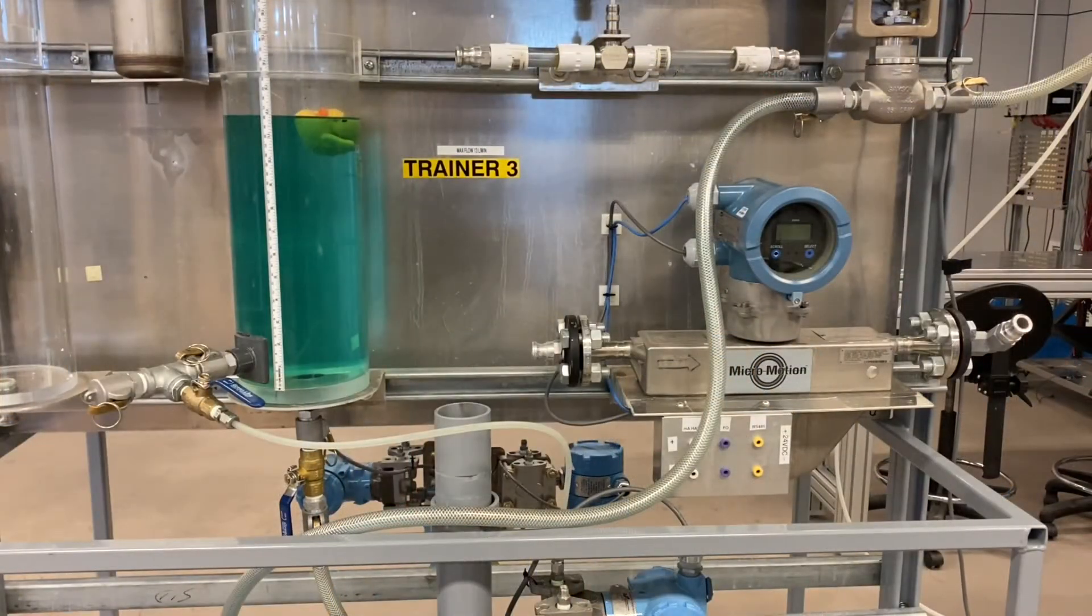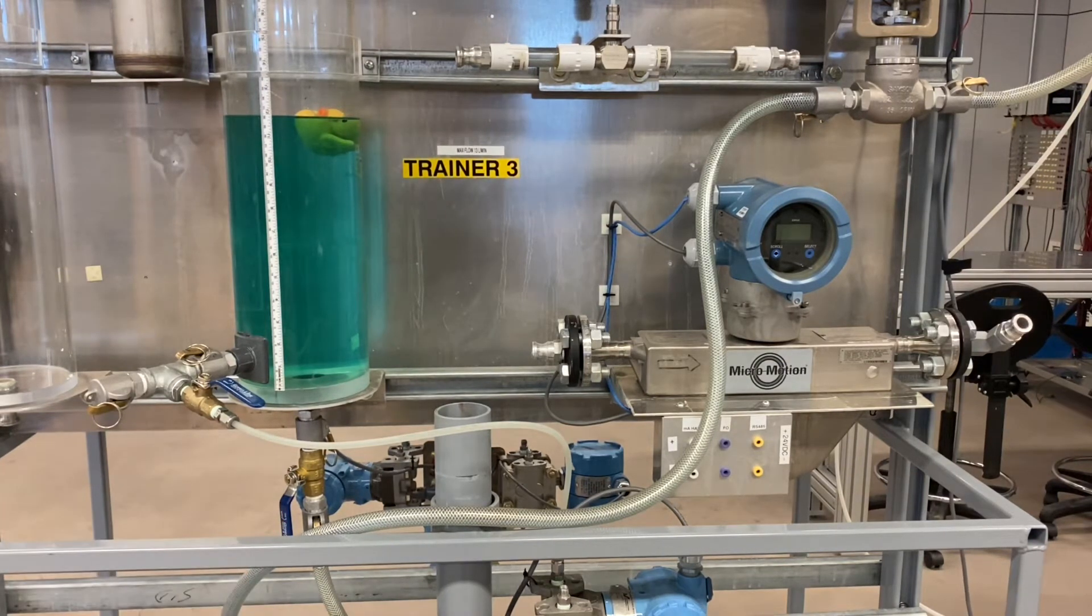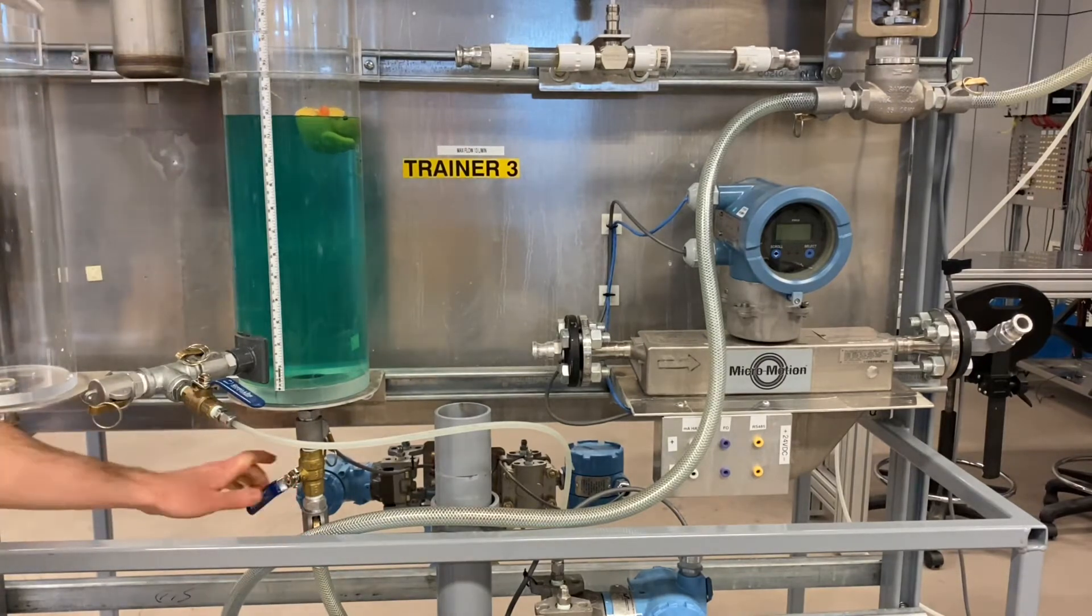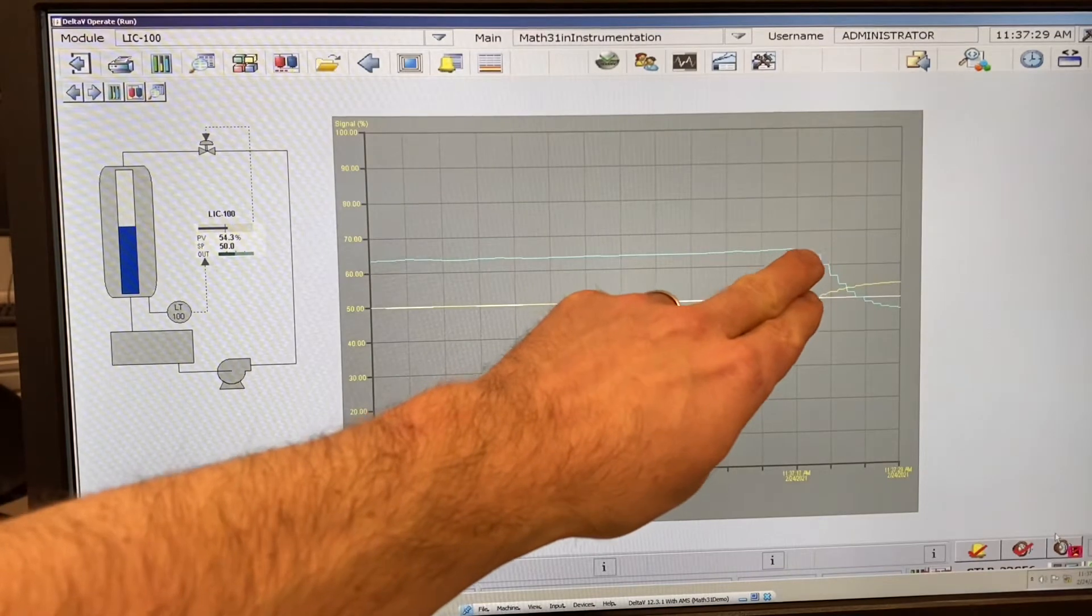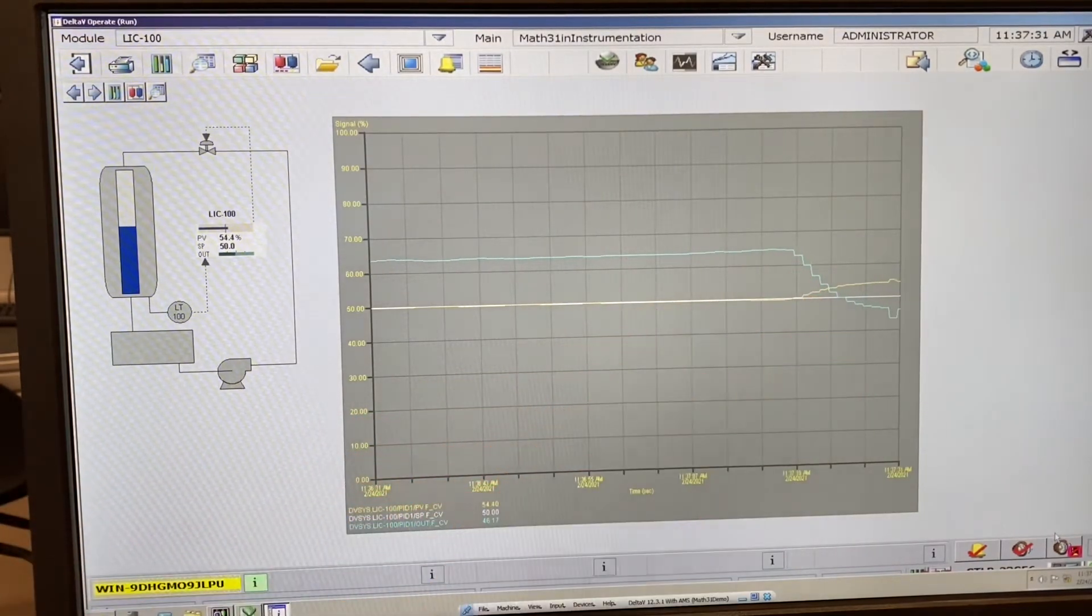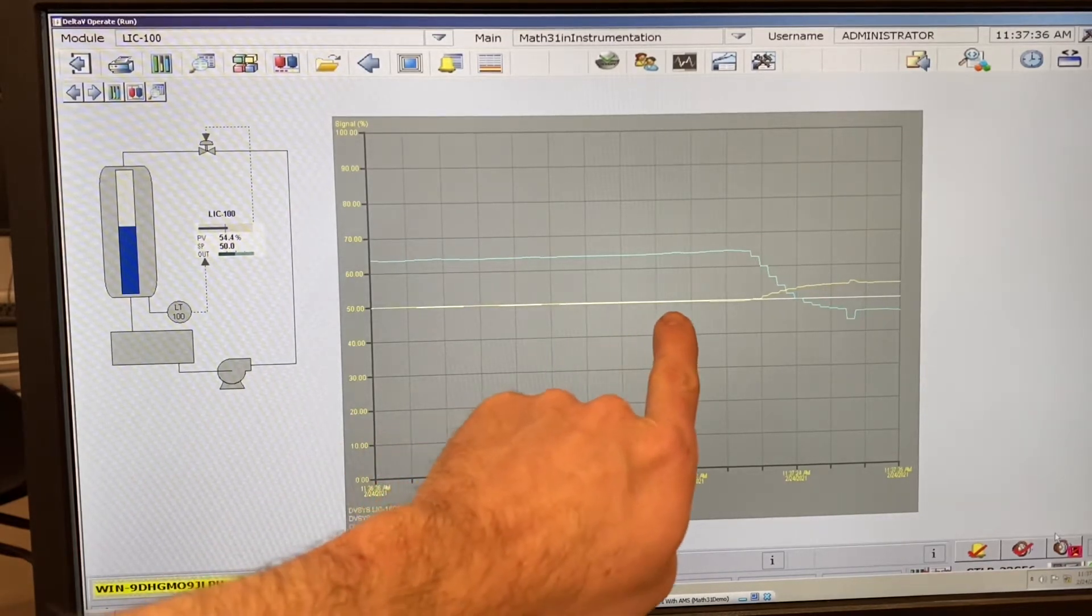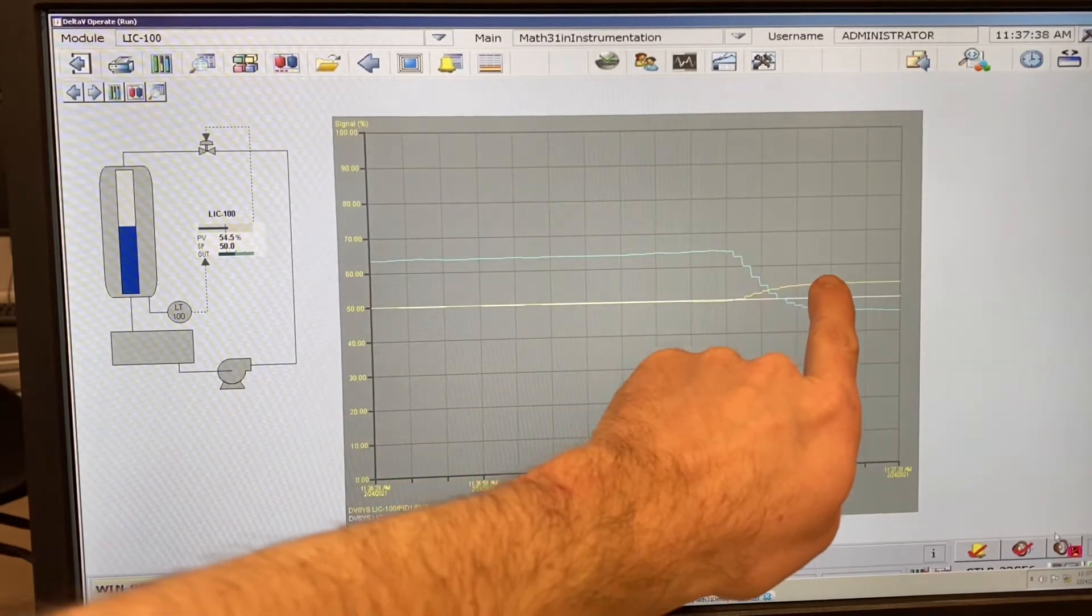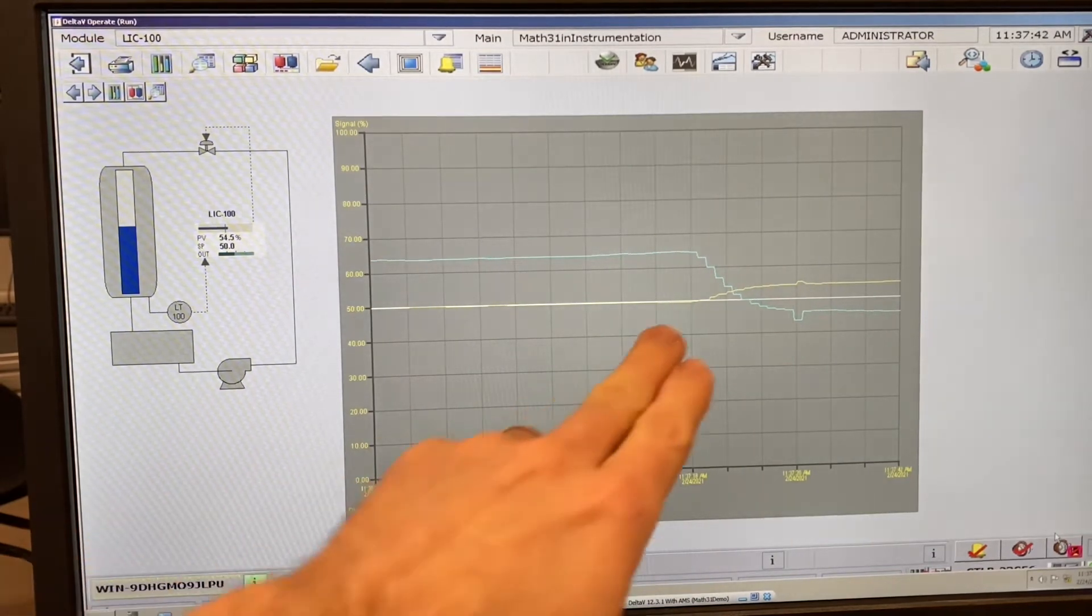Now I'm going to demonstrate the problem with proportional only control. I'm going to go and make a disturbance. I'm going to change the flow out of the tank here and we're going to see what happens. You can see that our disturbance caused our valve to start to close here to get the inflow to match the outflow. And you can see here now our process variable does not match the set point, but the level stopped moving.